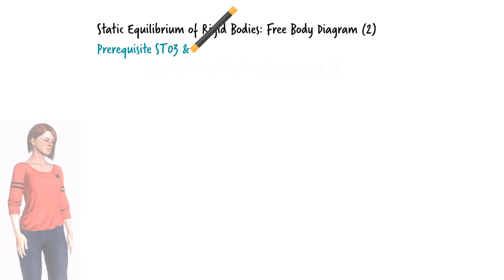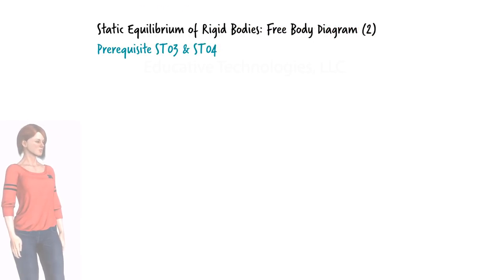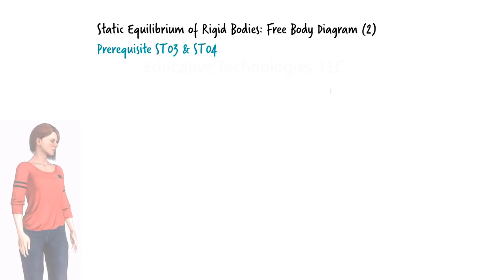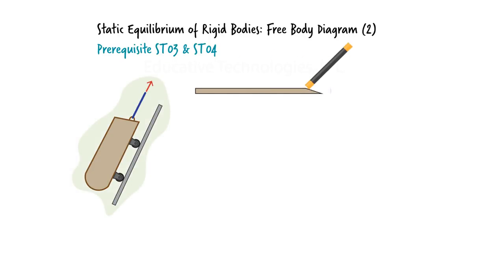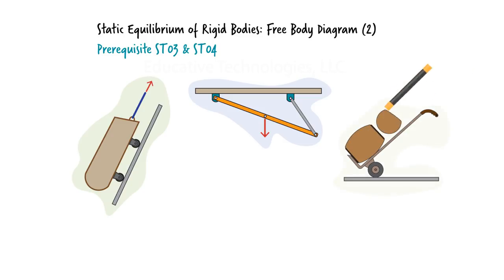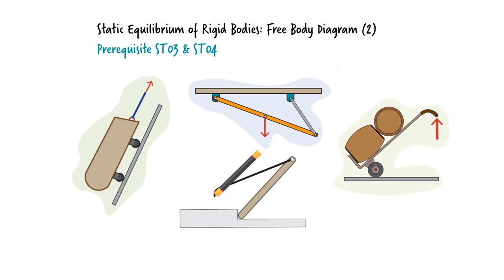In the previous lecture, we introduced the concept of free body diagram as a graphical representation of relevant forces and distances needed for writing the static equilibrium equations for a rigid body. In this lecture, we are going to examine several such rigid bodies and show how to construct a relevant free body diagram for each problem.